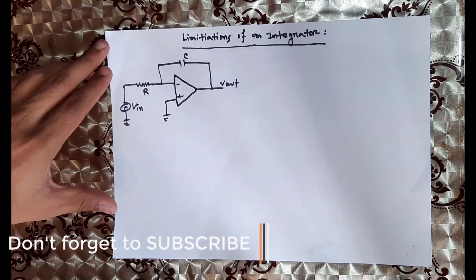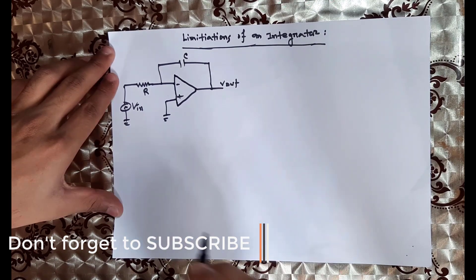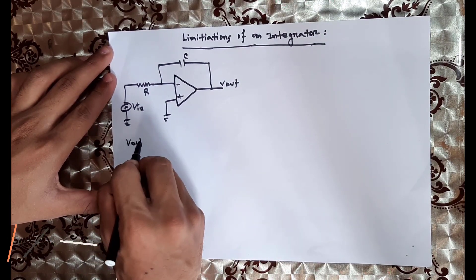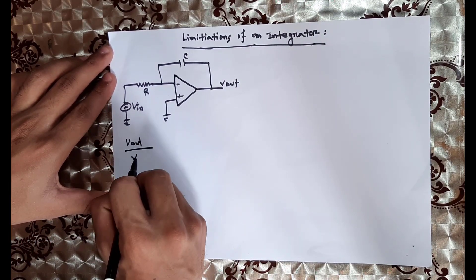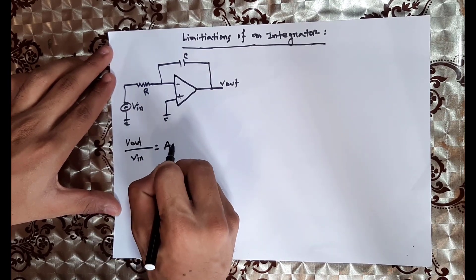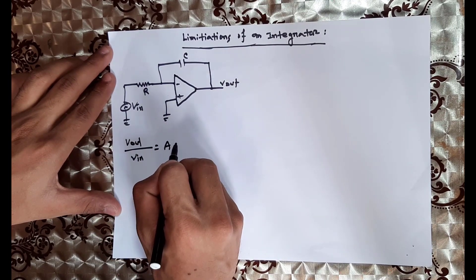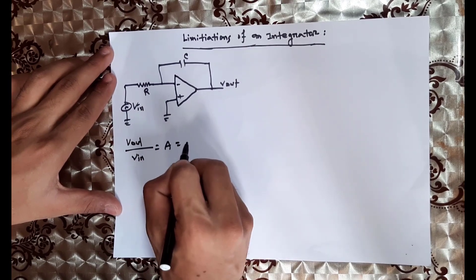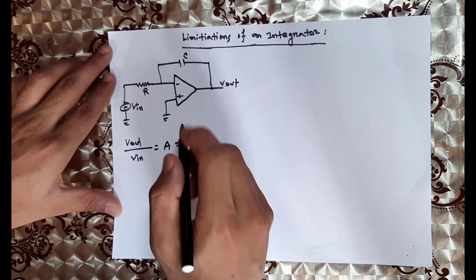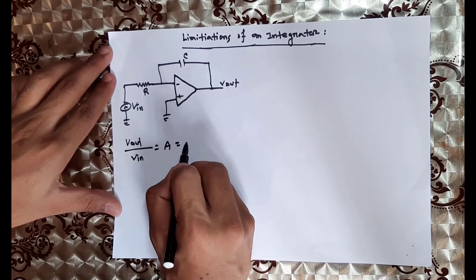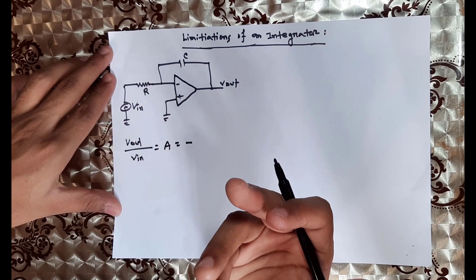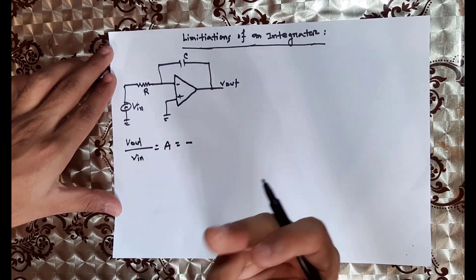I'm going to show you the integrator. As we can see, we will know how V output divided by V input works. The idea of V output over V input is gain. If you have gain, you will have a negative feedback. This is an inverting output. The answer is gain. Gain is minus Rf divided by R.